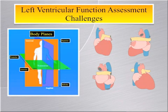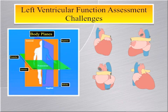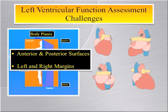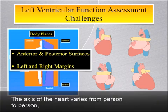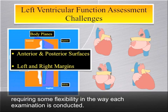One challenge of assessing the left ventricle's function is that it does not lie in a completely vertical or horizontal plane in the chest, and thus descriptive terms like dorsal and ventral can't be fully applied to describe the heart's orientation. The images depict the anterior and posterior surfaces of the heart, as well as its right and left margins. Note that the vena cava is oriented in a vertical plane, while the heart sits at a forward and downward angle in the chest. The axis of the heart varies from person to person, requiring some flexibility in the way each examination is conducted.